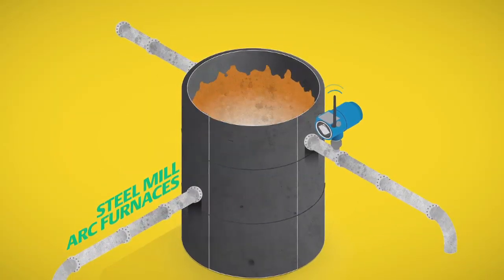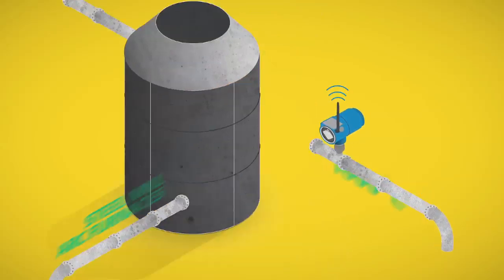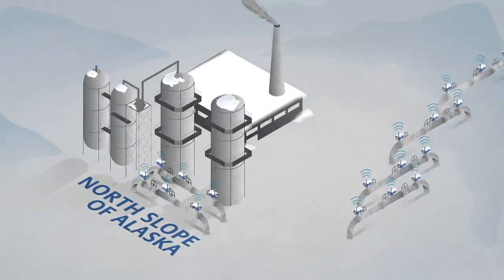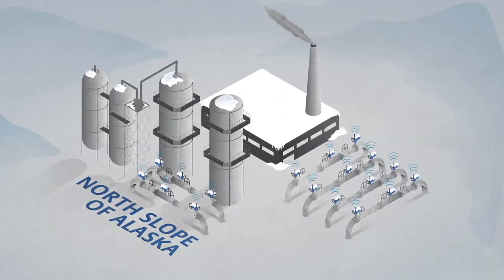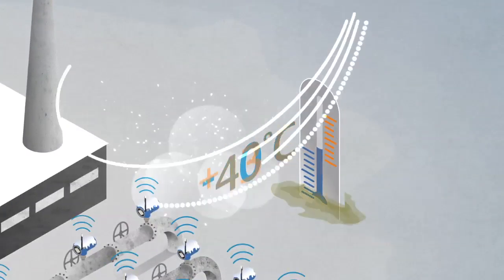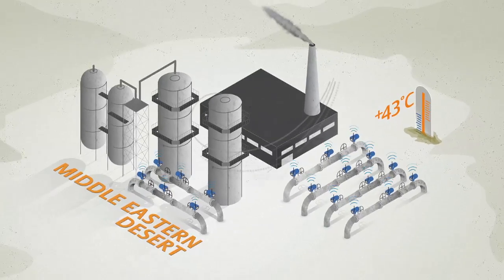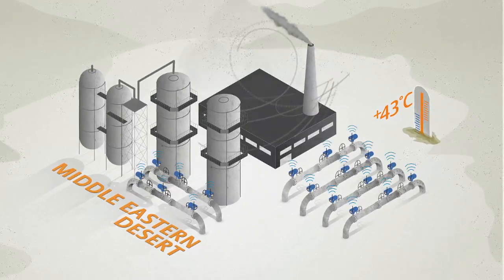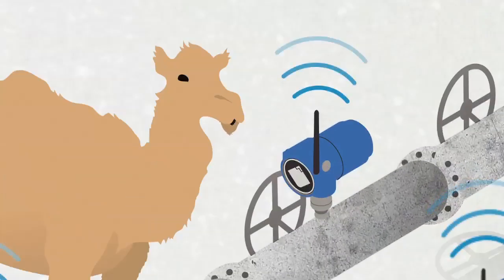Hot places like steel mill arc furnaces that operate at 1,600 degrees Celsius. Cold places like oil facilities on the north slope of Alaska, where temperatures drop below minus 40 degrees Celsius. Harsh places like the Middle Eastern desert, where our networks withstand frequent sandstorms and the gnawing teeth of bass and camels.